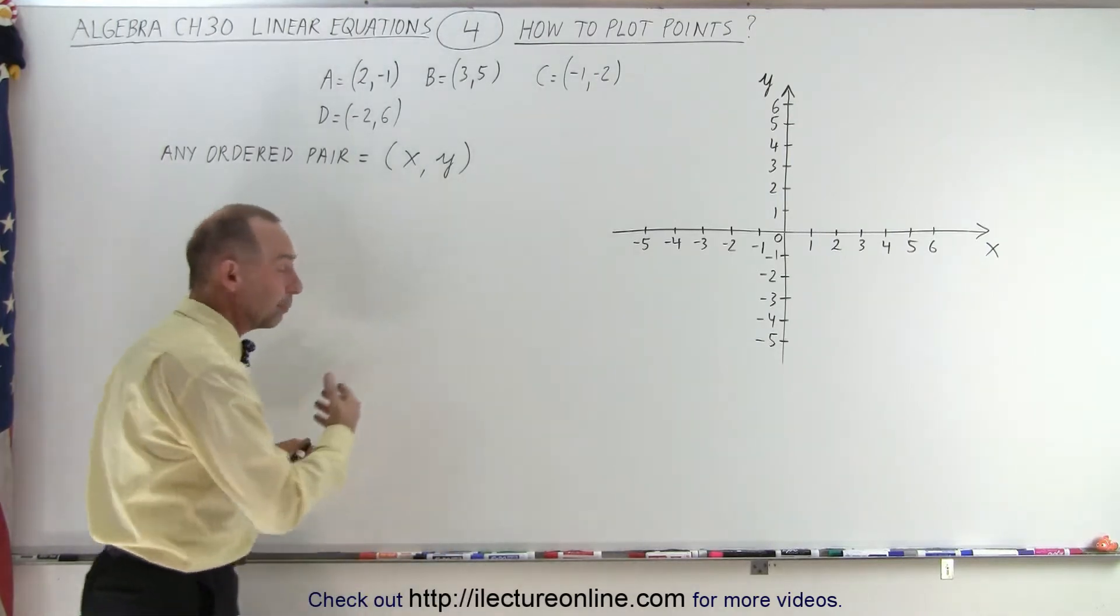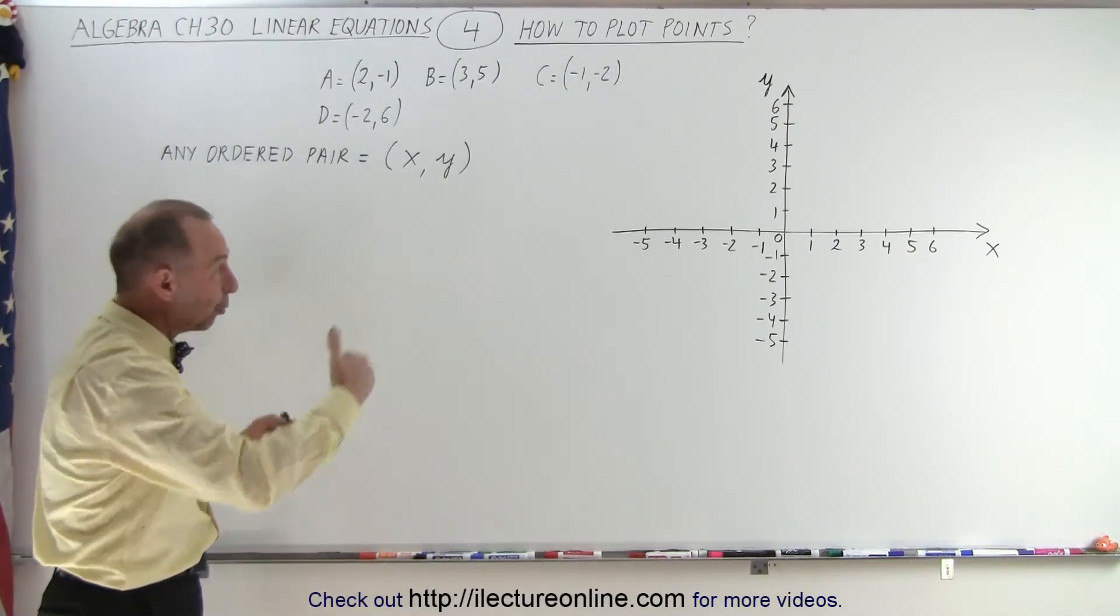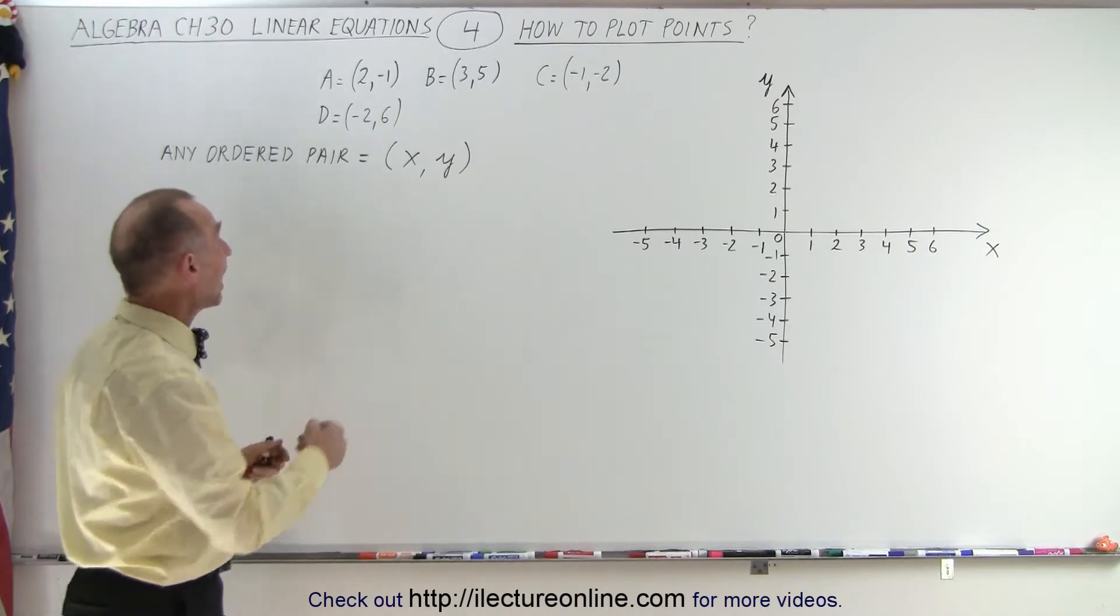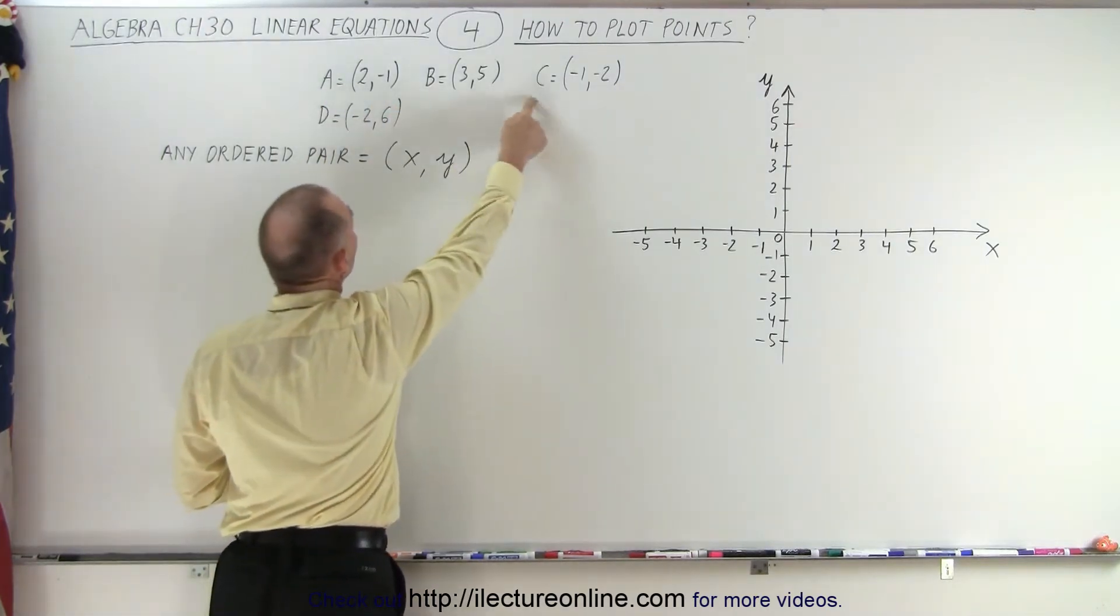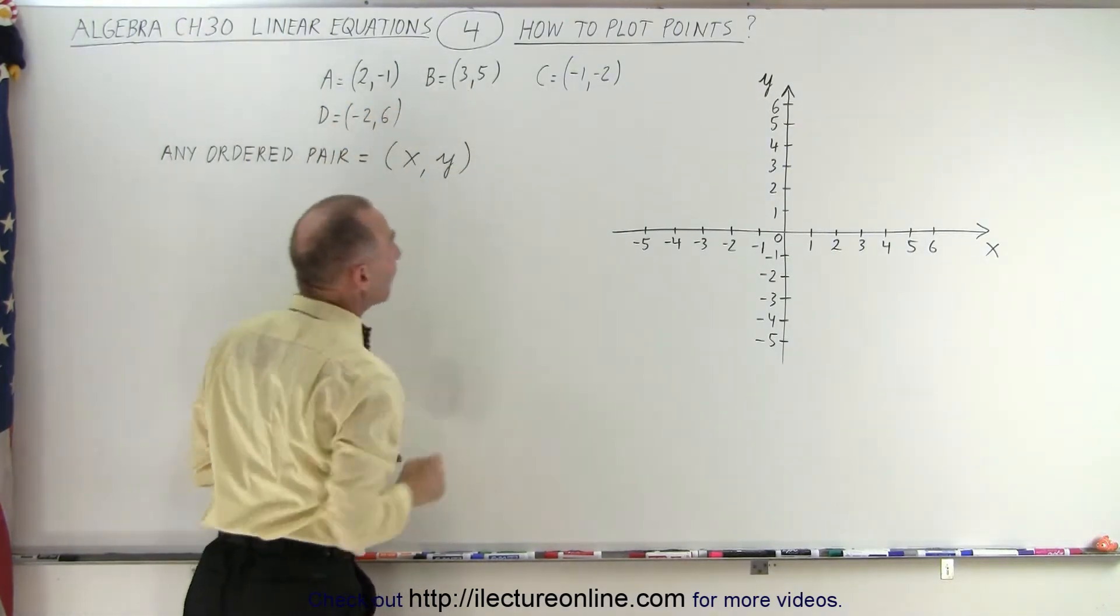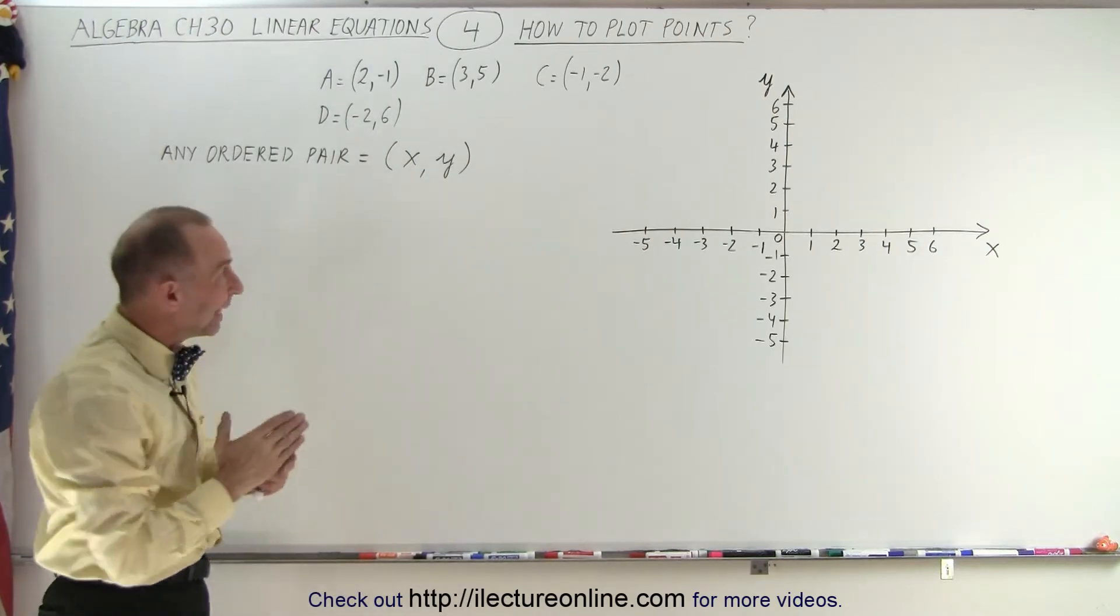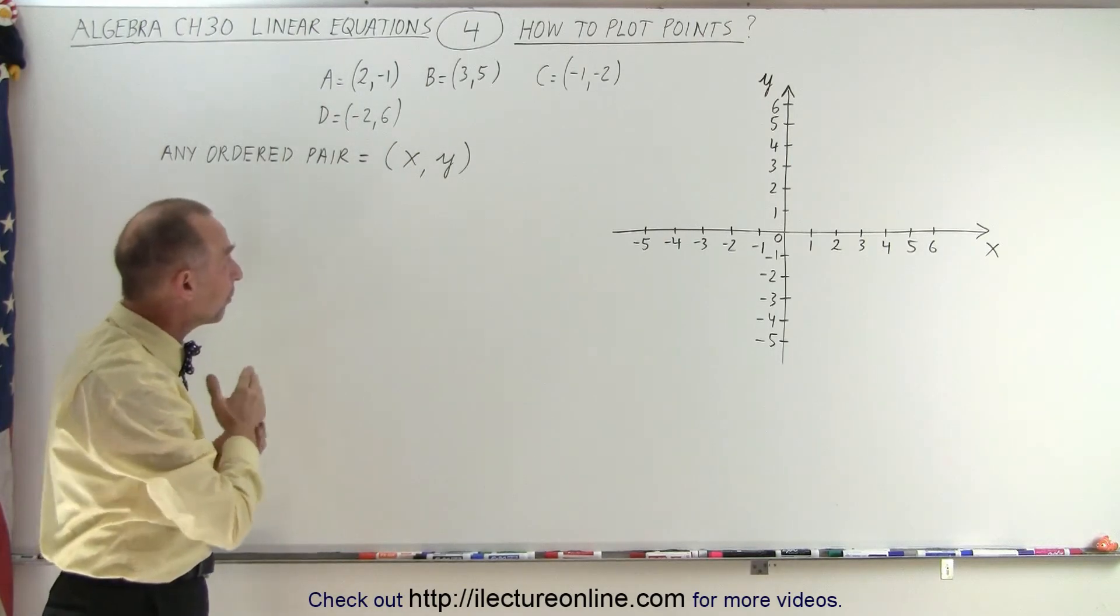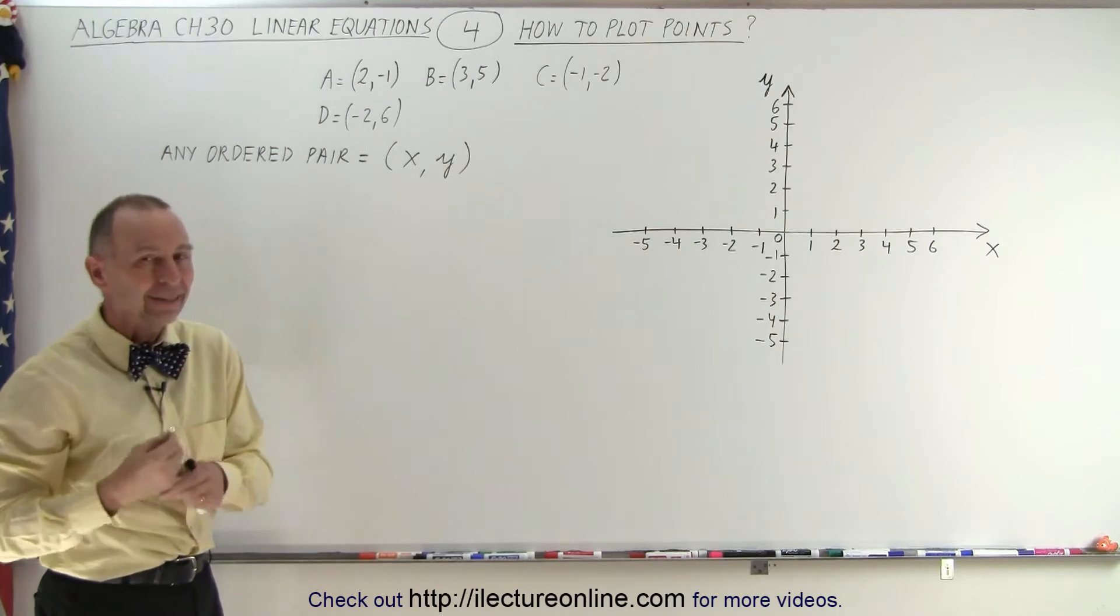Notice that any ordered pair represents a point on the x-y plane. Here we have point A, B, C, and D, and they all have two values. The first value is the x-coordinate of the point. The second value is the y-coordinate.